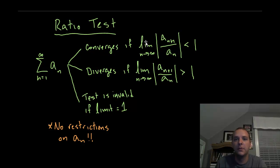The ratio test is probably the most versatile of all the convergence tests. Here's what it says. If you have a series sum from n equals 1 to infinity of a sub n, then this series is going to converge if the limit as n approaches infinity of the absolute value of a sub n plus 1 over a sub n is going to converge if that ratio is less than 1, diverge if the ratio is greater than 1, and this test unfortunately is invalid if the limit equals 1, which does happen on occasion.